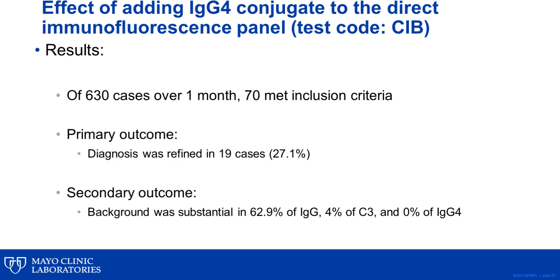In summary, we carefully evaluated 70 cases meeting inclusion criteria, and in almost a third of the cases, the diagnosis was refined due to the addition of IgG4 conjugate. We also observed background staining to be considerably less in IgG4 staining compared to IgG staining. Importantly, no case showed nonspecific deposition of IgG4. Upon making these observations, our group made the careful decision to add IgG4 as part of our standard panel for the direct immunofluorescence assay.